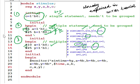Then at time equal to ten plus twenty-five, which is thirty-five nanoseconds, y equal to one. This is how the statements inside Initial Blocks are executed.